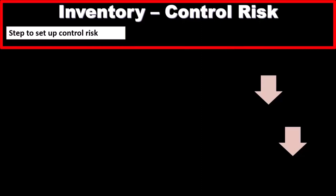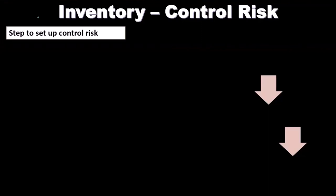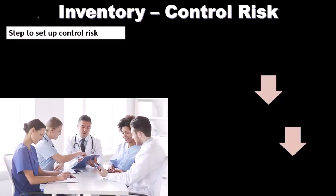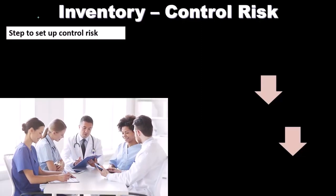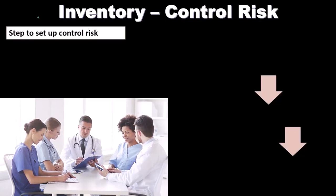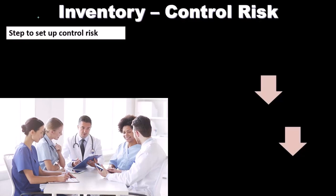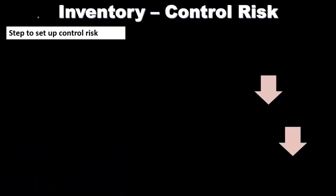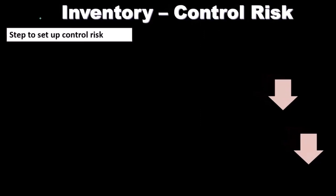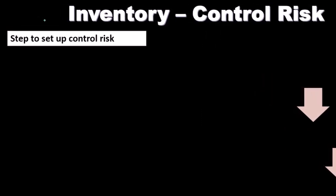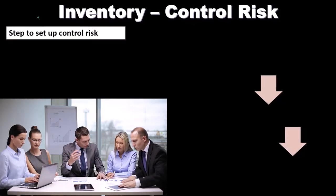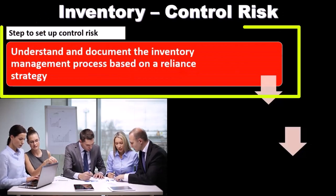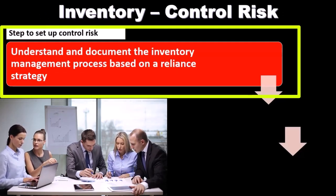Now we're moving to control risk. Control risk relates to the company putting controls in place knowing the inherent risks of the industry, in order to mitigate those inherent risks. As the auditor, we want to depend on the controls because we believe they will reduce the likelihood of a material misstatement. So we want to see what controls are in place, understand the process and the company, assess the inherent risks, and then evaluate the internal controls to determine whether we can rely on them.